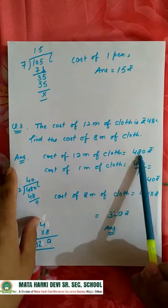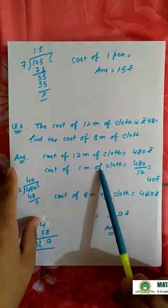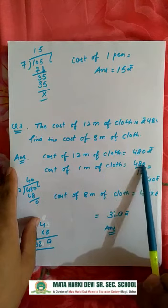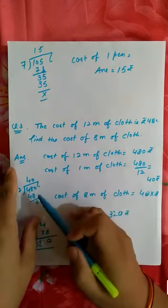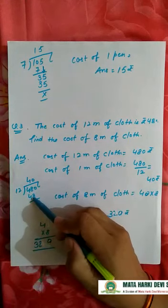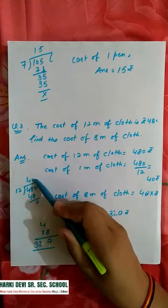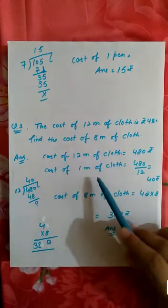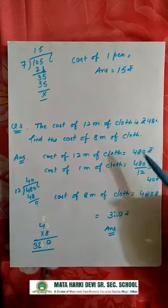480 by 12. So divide 12 into 48, so we write 4, and then next is 0. So cost of one meter of cloth is 40 rupees. Next we find the cost of eight meter of cloth.